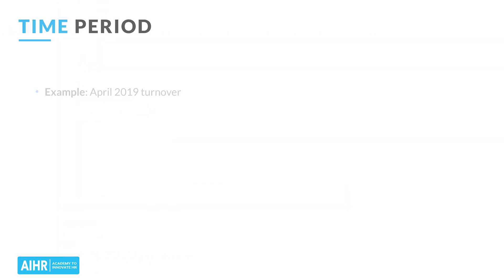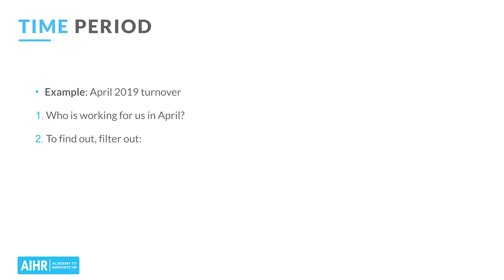To calculate turnover, we need to first select a time period. Here, we will select April 2019 as our period of interest — that is, we want to calculate turnover for the entire month of April. The first thing we need to do is figure out who is working for us in April. We have data from a wide date range, not just April 2019, so we need to do some filtering. First, we need to drop all the data for people hired from May 1st, 2019 onward. We don't want people hired after our period of interest to be included in our headcount or turnover metrics. Second, we also want to filter out all the people who left before April 1st, 2019. They quit the company earlier, so we want to make sure they are not counted in our departure numbers or headcount.